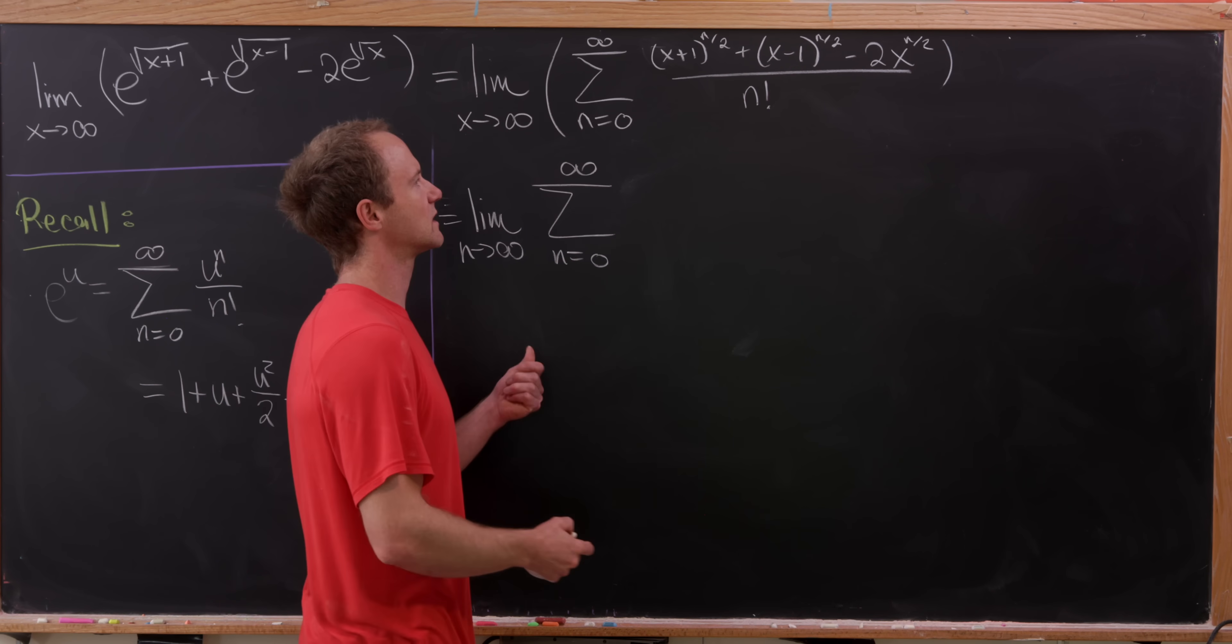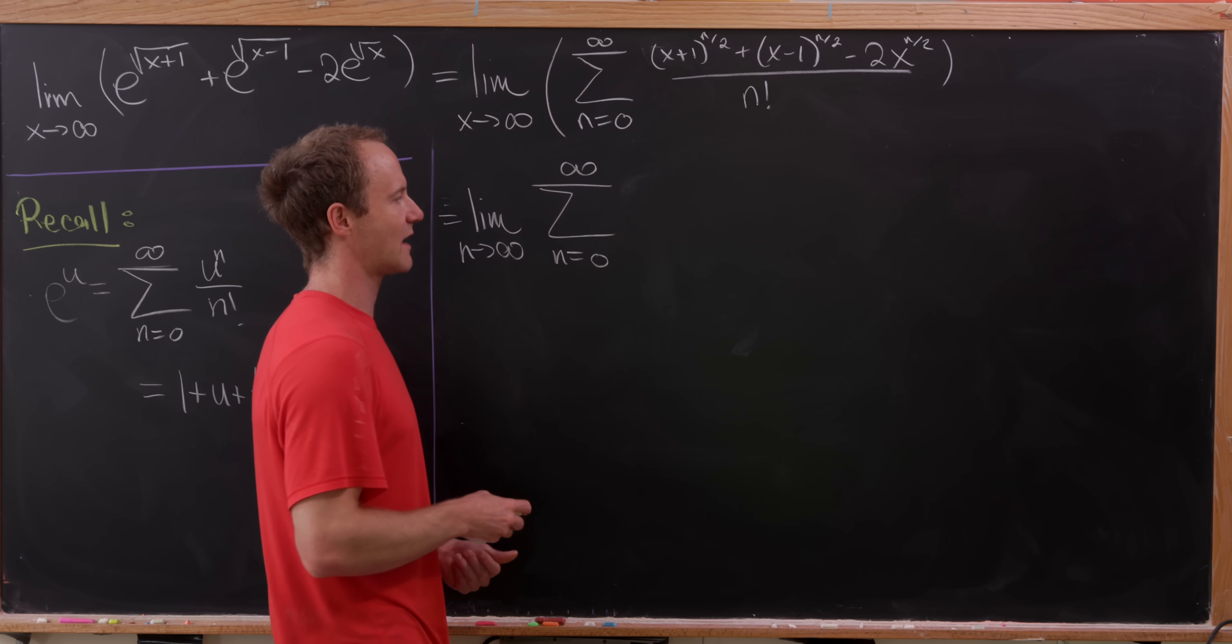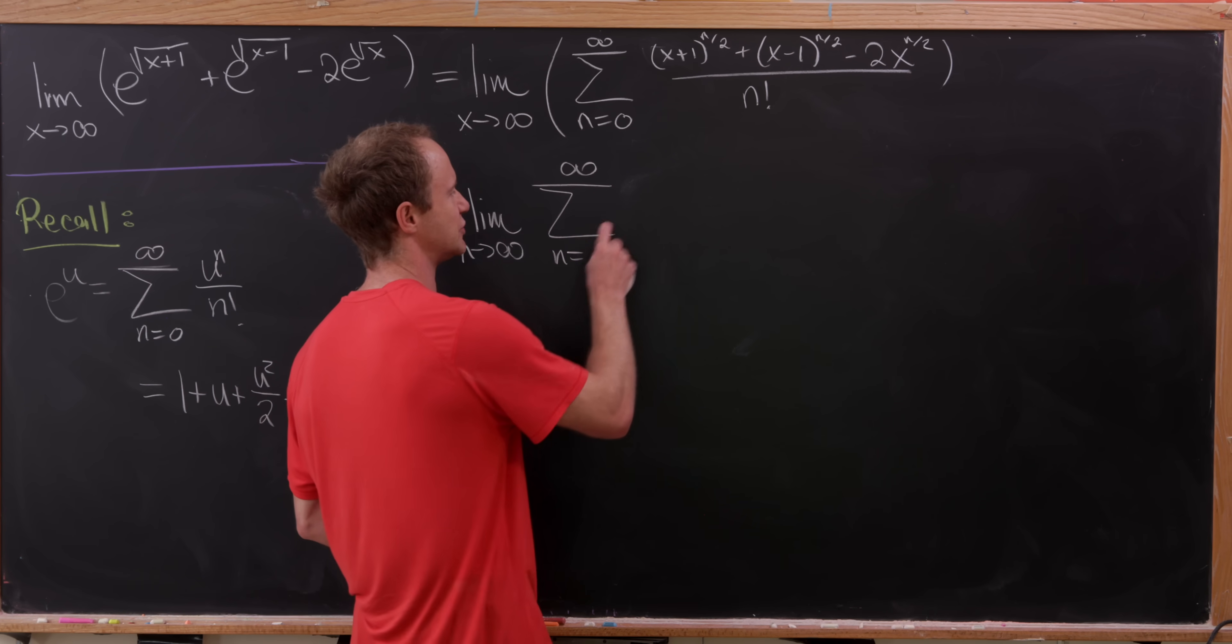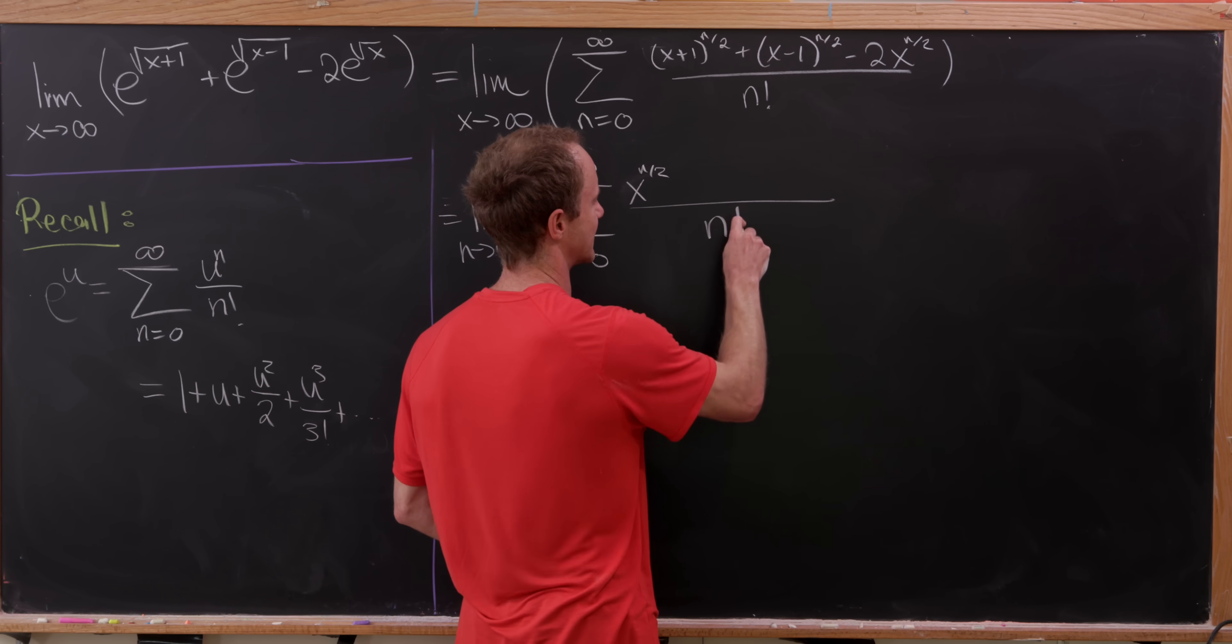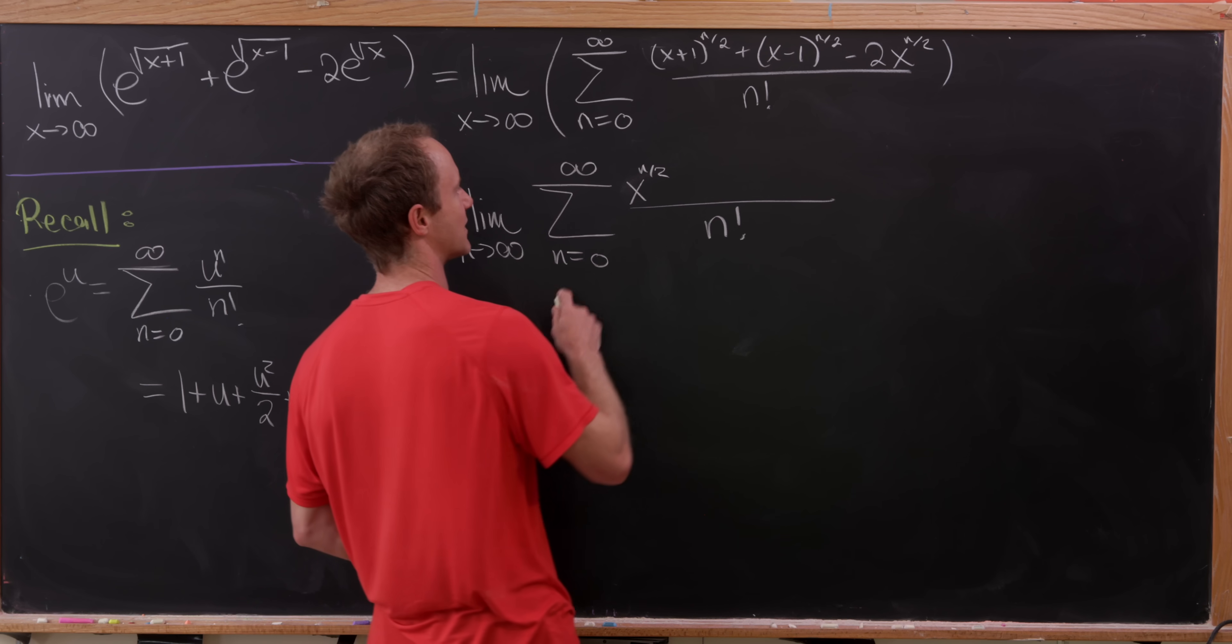And then since we're, like I said, multiplying the numerator and the denominator by 1 over x to the n over 2, I'm going to take an x to the n over 2 in the numerator. So I'm really just factoring it out. Maybe that would be a better way of thinking about that.